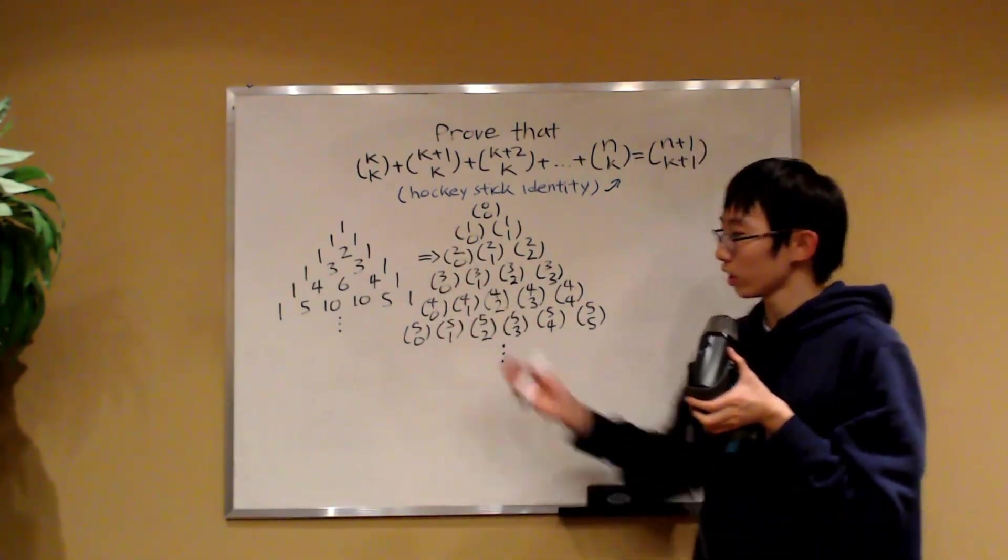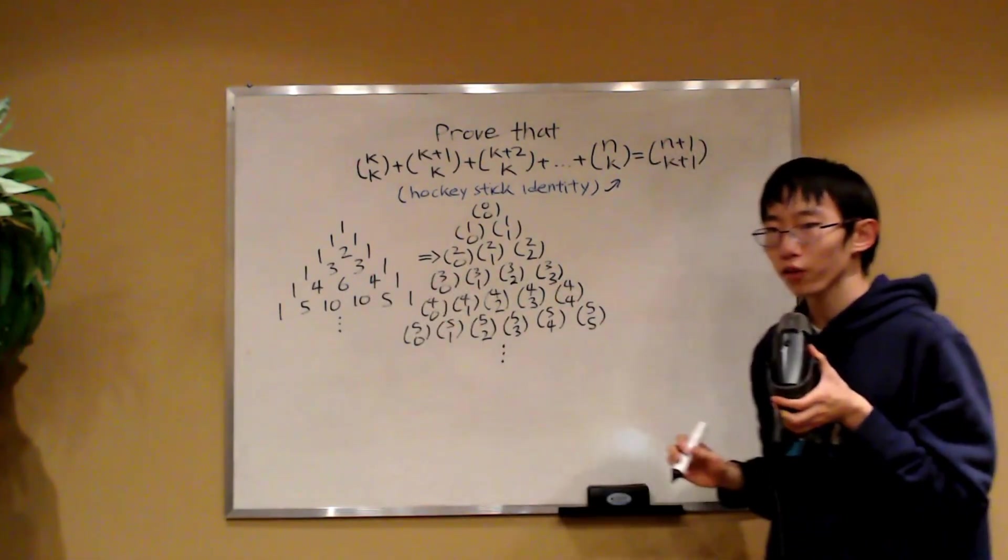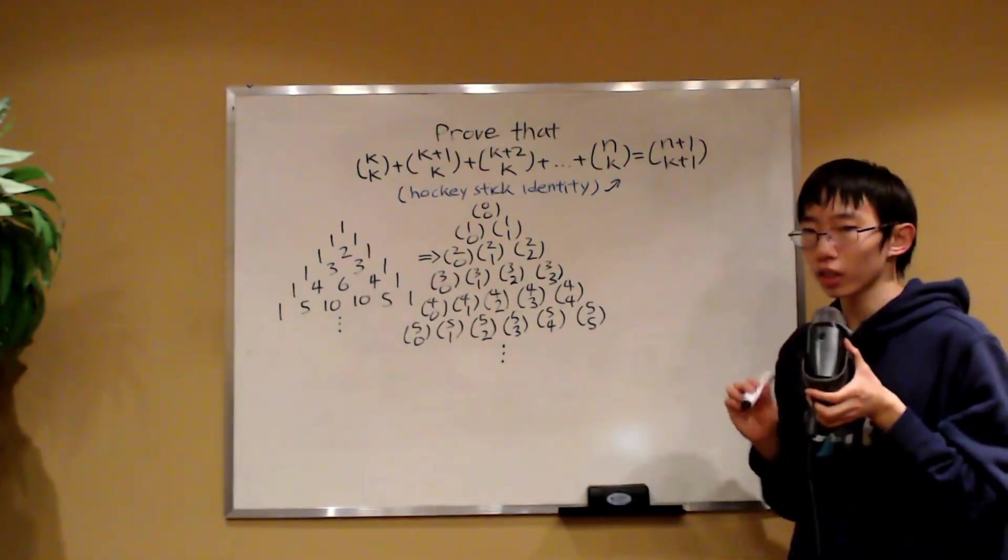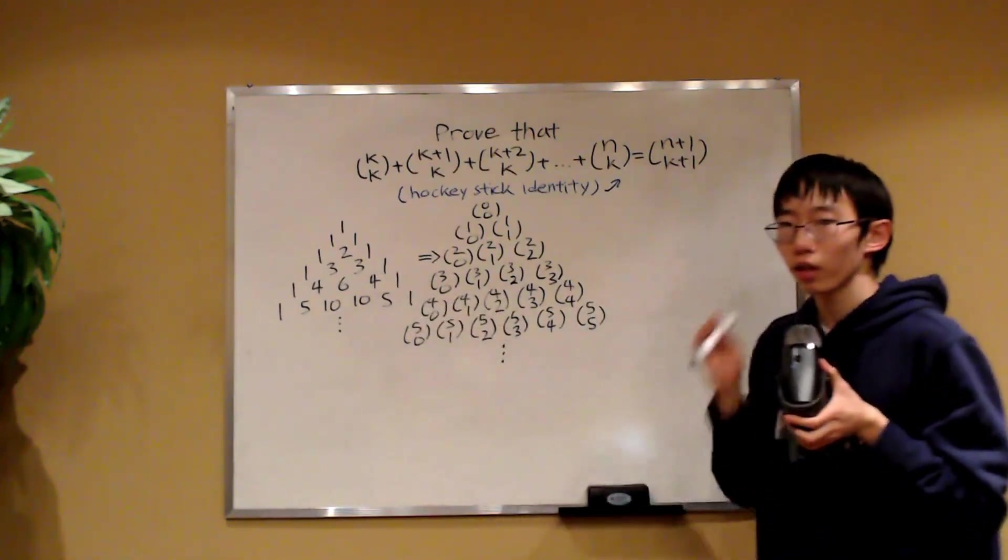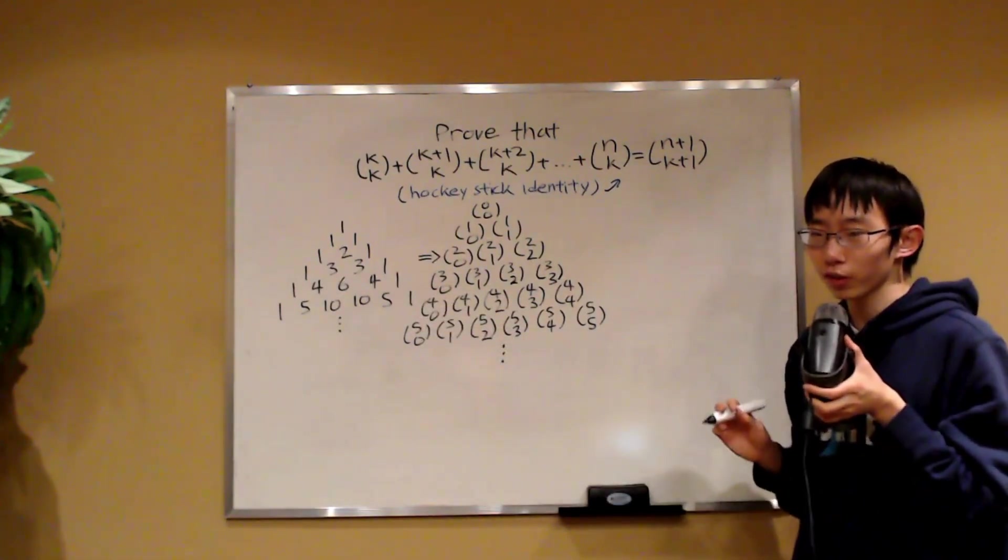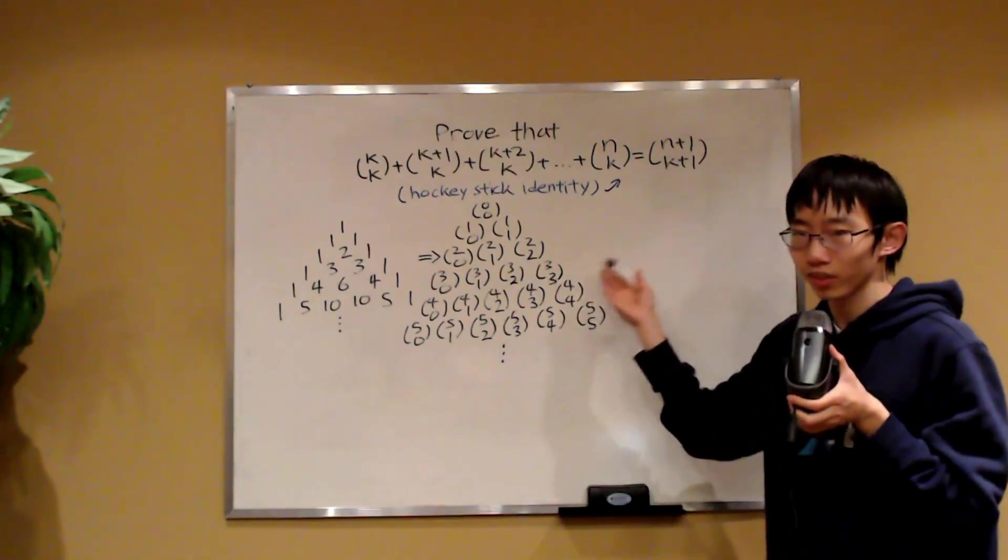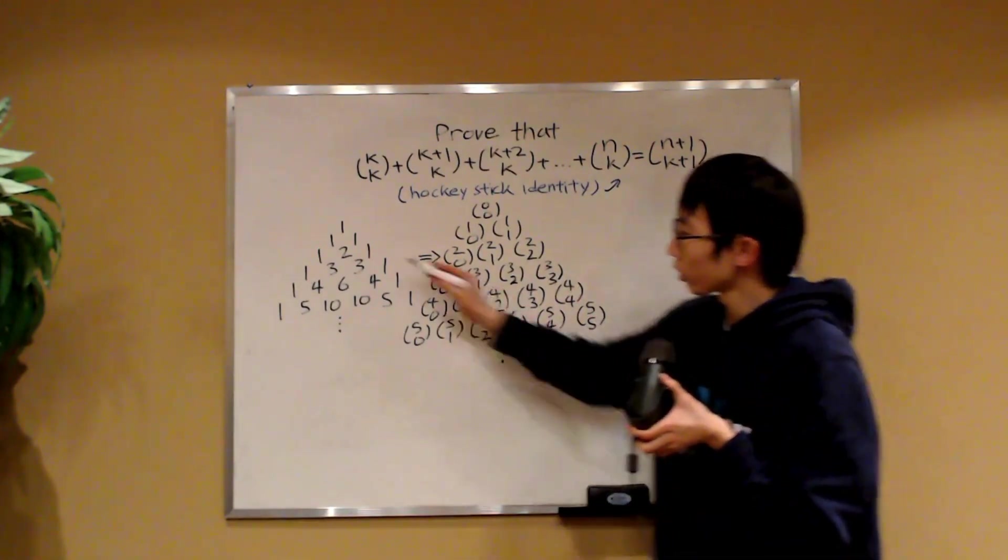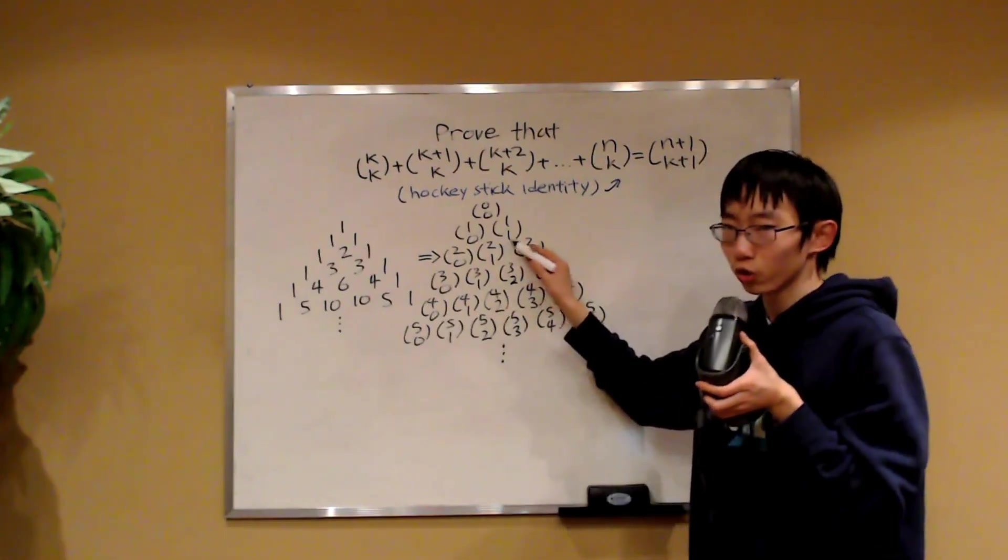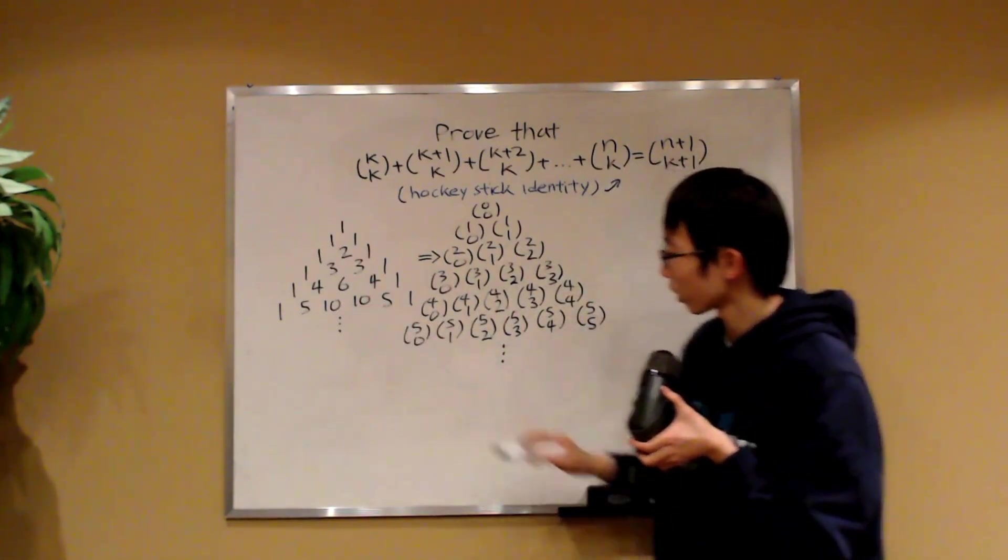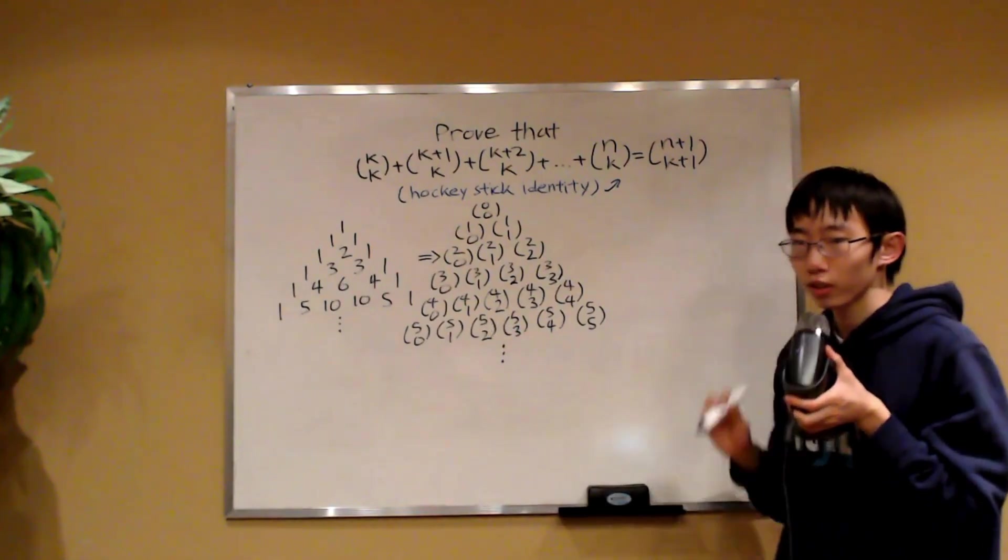Now, on its own, it just looks like this. However, we can actually write each of the numbers in the triangle as a binomial coefficient. So that's something choose something. So over here, this 2 is basically 2 choose 1, and this 10 over here is 5 choose 2.